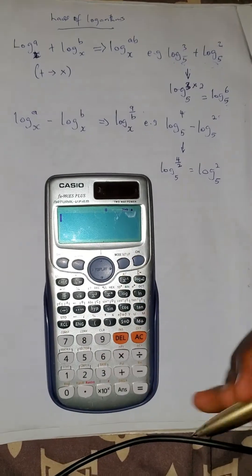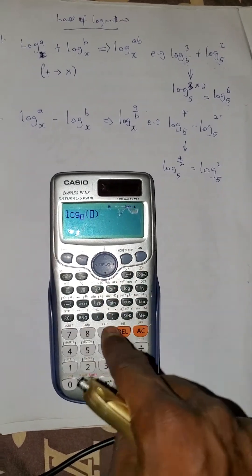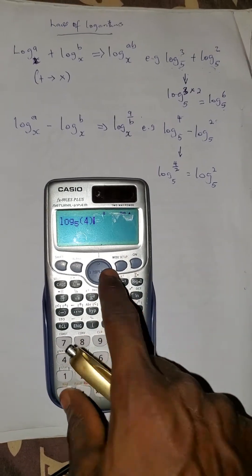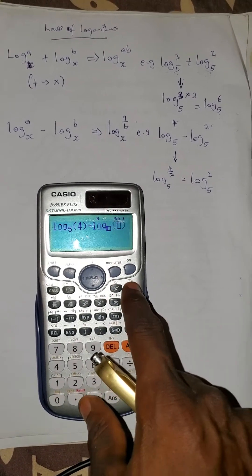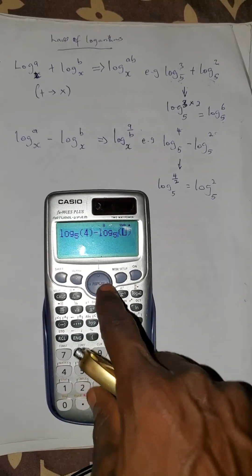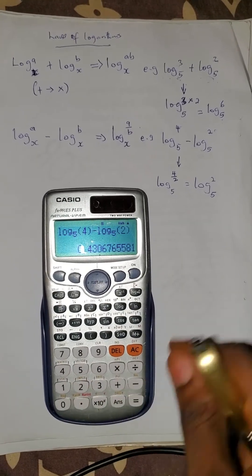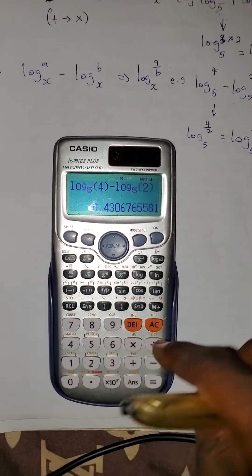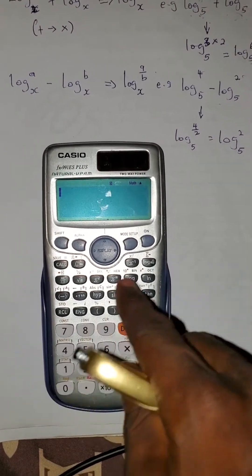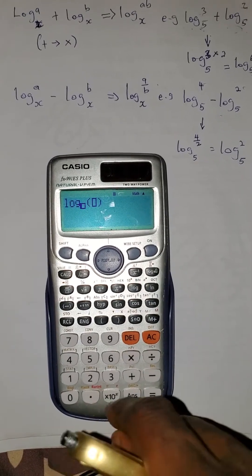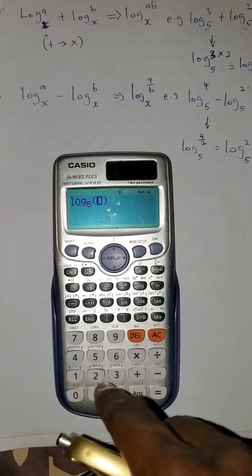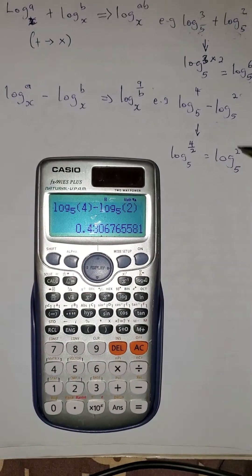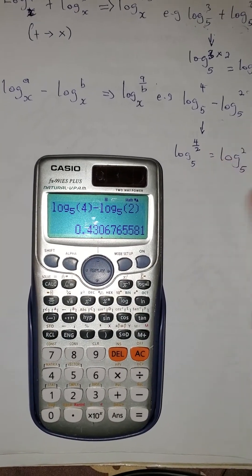Finally you have log 2 base 5. If you press this on the calculator — log 4 base 5 minus log 2 base 5 — you get 0.43, and log 2 base 5 also gives 0.43. So both sides match.